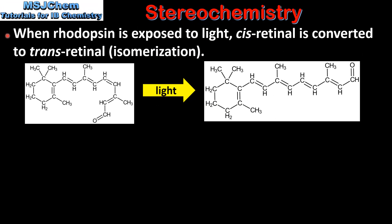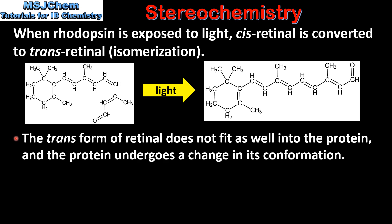When rhodopsin is exposed to light, cis retinal is converted to trans retinal. This process is called isomerisation. The trans form of retinal does not fit as well into the protein, and the protein undergoes a change in its conformation.